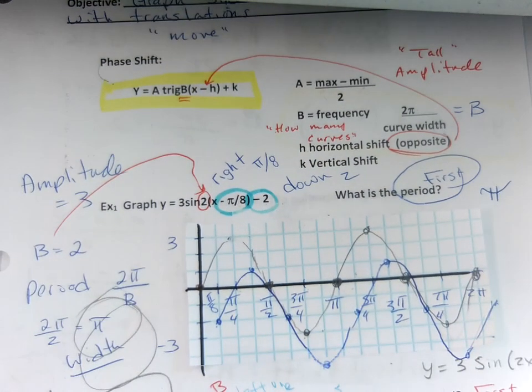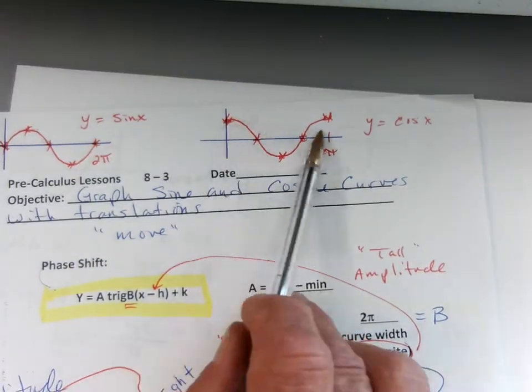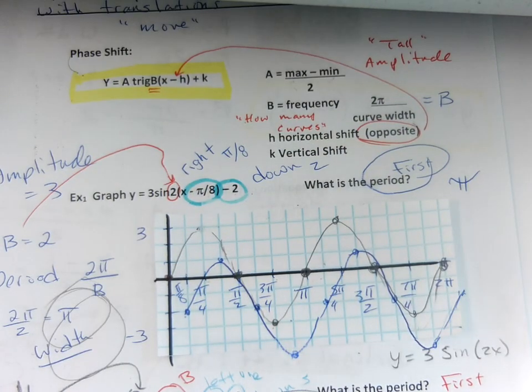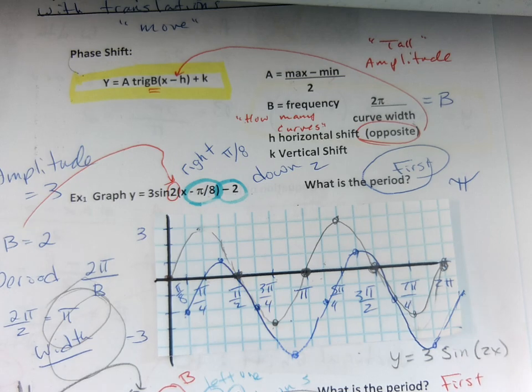Now, the second one, we did a cosine. Again, a cosine curve looks like this. We took a general cosine curve, and now the width of the curve, we need to know how wide it is, is 2π always divided by b. Well, b turns out to be π/4. That's kind of weird. So I did that.